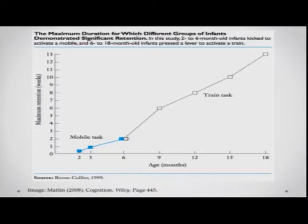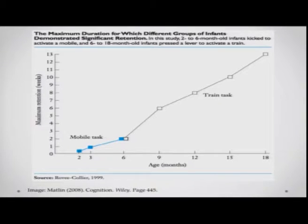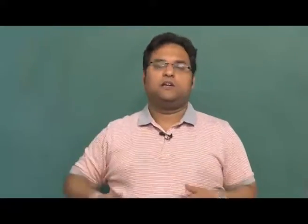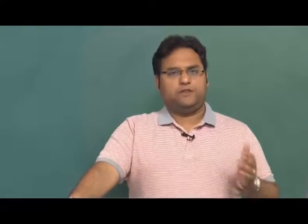Comparing the mobile task and the train task, 2-to-6-month-old infants already kicked to activate the mobile, and 6-to-18-month-old infants pressed a lever to activate the train. Around 6 months, infants could retain the kicking idea for up to 2 weeks. As age in months increases, the amount of retention increases from 2 weeks to up to 13 weeks in the train task — showing an almost steady and linear improvement in memory during the first 18 months of life.